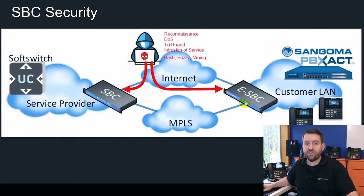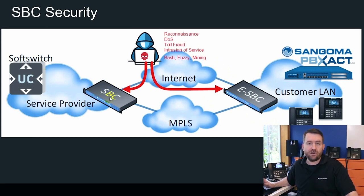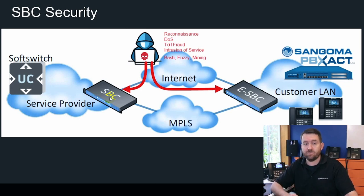It provides intrusion detection and guards against reconnaissance and toll fraud attacks. In this example here, we can see an SBC in use. On the customer side, the SBC is sitting between the PBX on the LAN and the VoIP traffic coming in from the WAN. There's another SBC at the provider, which is pretty standard practice for anyone who provides SIP trunking to customers. There are tons of security features included with the Sangoma SBCs, including a traditional IP firewall with service, protocol, and port rules.